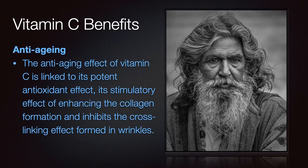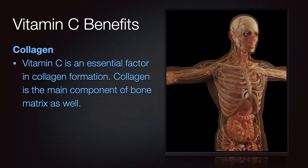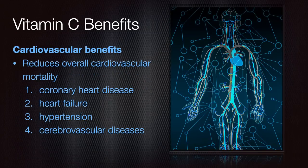Vitamin C also helps with the increase in antibody production, which is very useful in fighting infections. The anti-aging effects of vitamin C are mainly due to its antioxidant effect. It is also a brilliant enhancer of collagen, helping to cross-link different collagen strands, reducing wrinkles, and improving skin quality. Because of its enhancement of collagen, vitamin C helps in bone matrix, making bones stronger, and also helps with collagen required for forming capsules or tendons of muscles. There are several publications on the cardiovascular benefits of vitamin C — it reduces overall cardiovascular morbidity and mortality and can help with coronary heart disease, heart failure, hypertension, and cerebrovascular diseases.